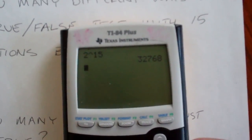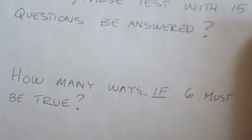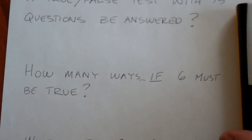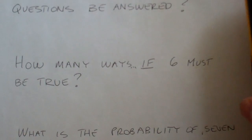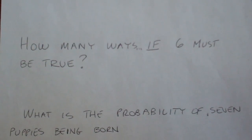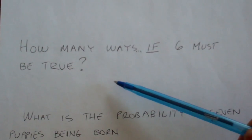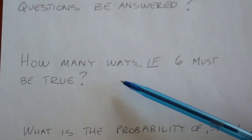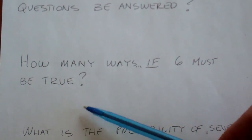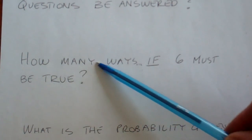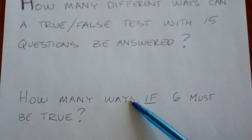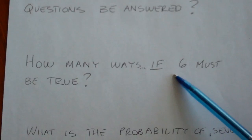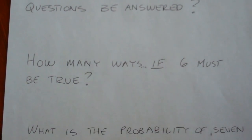A lot of times we want to work out probabilities when you have two outcomes like true or false or left hand/right hand. Those are called binomial experiments — we're doing a 50-50 binomial. We're assuming the probability of arranging true and false, or flipping coins and getting heads or tails, is 50-50 if done randomly. So this is: how many ways can our true-false test with 15 questions be arranged if there are 6 that must be true?